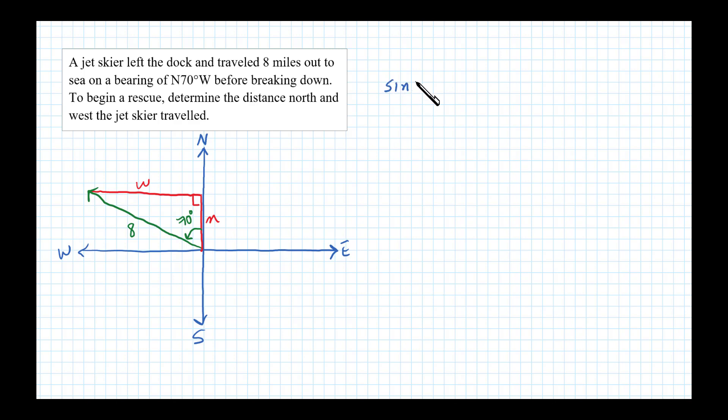Sine of 70 degrees is defined to be opposite over hypotenuse, so in this case w over eight. Now we can cross multiply and solve for w. In other words, eight times sine of 70 degrees equals w.